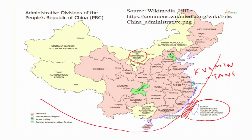There are 22 provinces and 5 autonomous regions — one for the Mongols, one for the Hui, one for the Uyghurs, one for the Tibetans, and another for the Chuang. Then there are four municipalities, which are large cities directly ruled by the central government. China is a unitary state, so ultimately there is no division of power between the central government and the provinces. Whatever responsibilities the central government gives to the provinces, they are autonomous to follow, but legally the provinces do not have any separate existence from the central government.